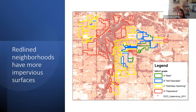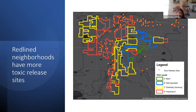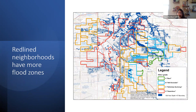Red-lined neighborhoods have more impervious surfaces — darker colors on the map indicate more impervious surface cover, and red-lined communities show more of this while green and blue-lined communities show lighter colors. Red-lined neighborhoods also have more toxic release sites — EPA toxic release site distribution aligns more closely with red-lined communities in Denver. Additionally, red-lined neighborhoods have more flood zones, with a greater distribution of hundred-year flood zones in red-lined communities than in green or blue-lined communities.